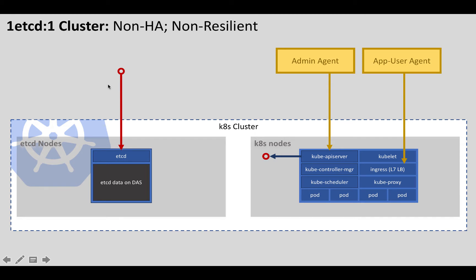The first one — a one etcd by one cluster — is non-HA and non-resilient. It's non-HA because if this node dies, all of your stuff is gone. Your pods might continue to run, and the app user agent might continue to access your pods, but essentially you're done — you can't schedule any more pods. And if any of the pods die, they don't get auto-healed because the Kube API server no longer works without access to etcd, and so your controller manager and Kube scheduler will also stop working. So if etcd dies, you're done.